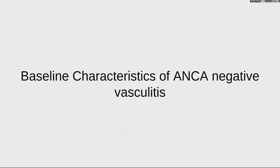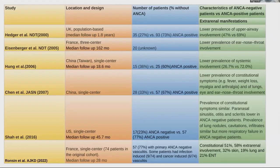Let's talk about baseline characteristics of ANCA-negative vasculitis. There aren't many studies — only six. The earliest, from 2000, was a UK population-based study with 27% ANCA negative versus 73% ANCA positive, and ANCA-negative patients had lower prevalence of upper respiratory involvement.